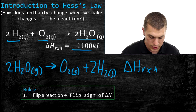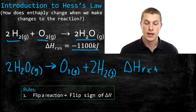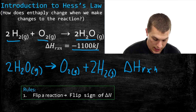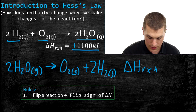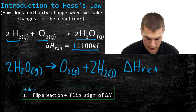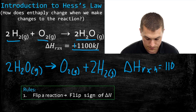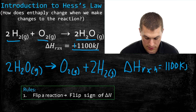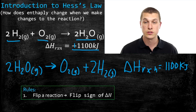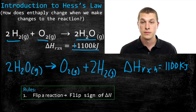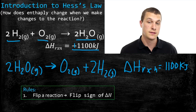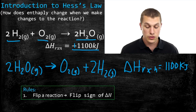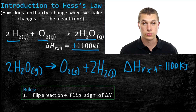We take this 1100 kilojoules and change the sign from negative to positive, so our new enthalpy of reaction is positive 1100 kilojoules. If it gives off 1100 kilojoules to make water, it costs us that same 1100 kilojoules to split it apart. That's the first rule.